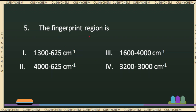Next, the fingerprint region. This is a spectroscopic region. The fingerprint region is generally in the area of 600 to 1400 cm⁻¹. The right answer for this region is 1300 to 625 per centimeter. This is the fingerprint region in IR spectroscopy.